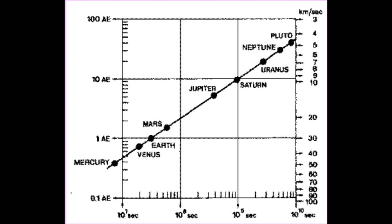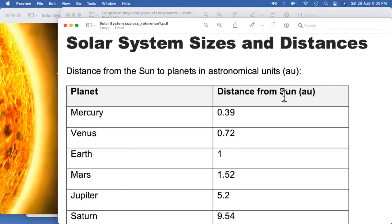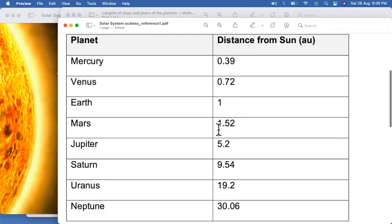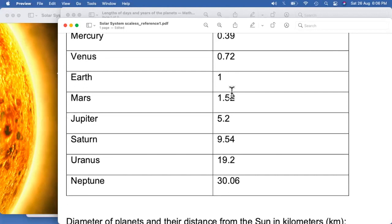We have something called an astronomical unit. One astronomical unit is the distance from Earth to the Sun — we use Earth as our reference point, so that is 1. On the basis of that, Mercury is smaller, Venus is smaller, but after Mars the distances grow significantly: Jupiter is almost 5 times, Saturn is 10 times, Uranus is 20 times, and Neptune is approximately 30 times the Earth-Sun distance. This gives a better picture of how far the other planets are.